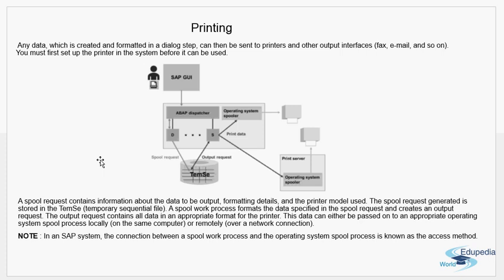Whenever a dialogue work process encounters a print statement, the spool work process takes over. It formats the data and sends it out to the operating system spooler for printing. A spool request contains information about the data to be output, the formatting details, and the printer model used. The spool request generated is stored in TemSe — Temporary Sequential file. A spool work process then formats the data specified in the spool request and creates an output request.